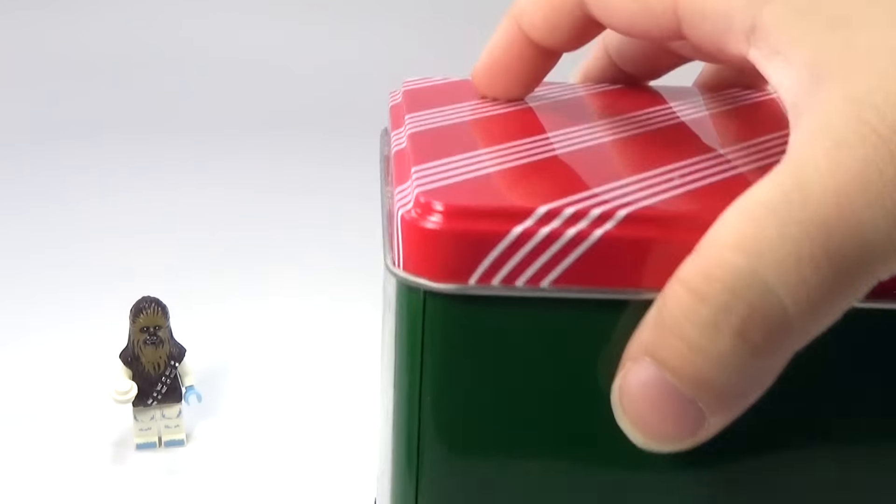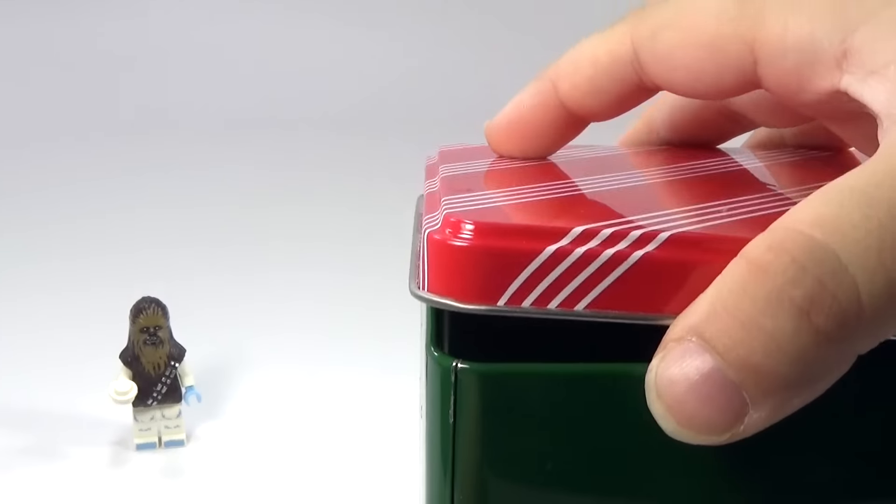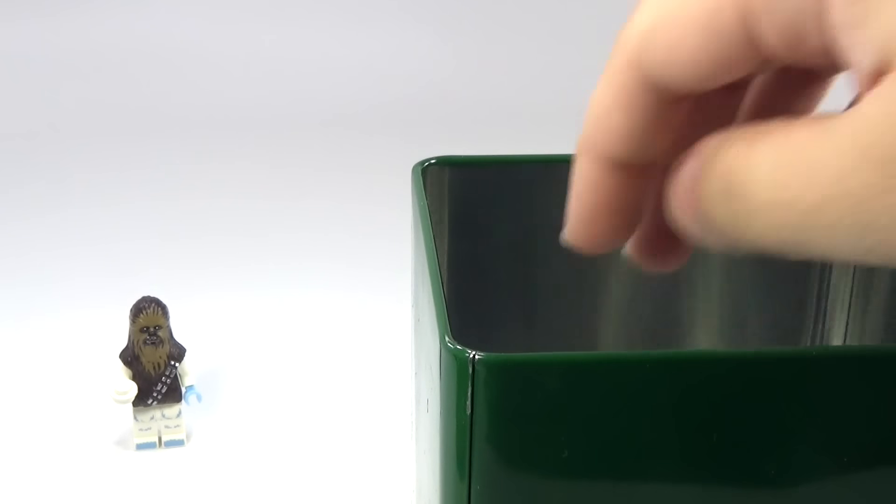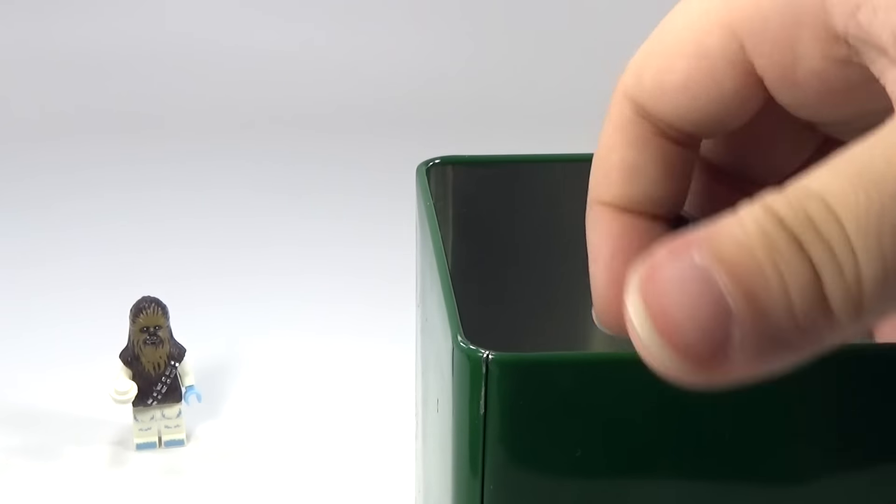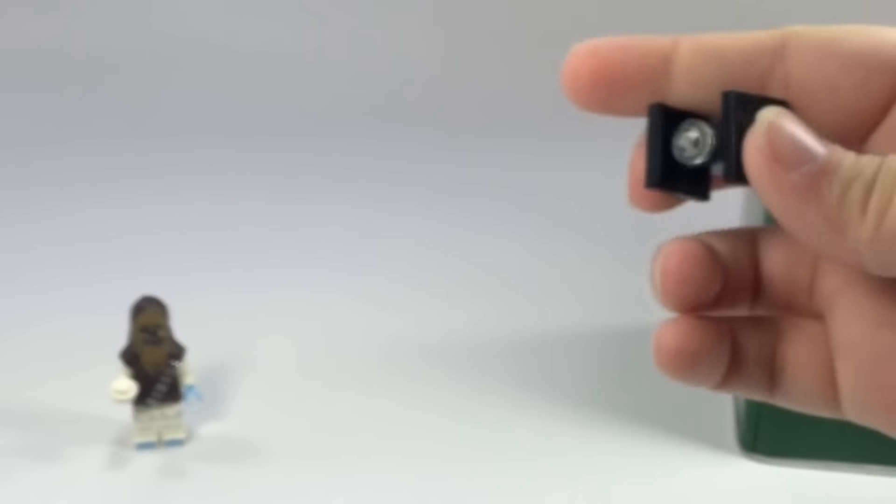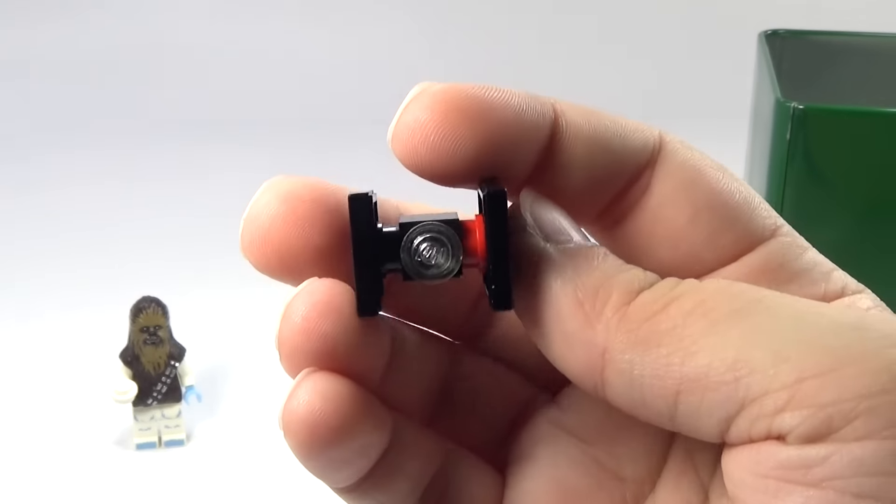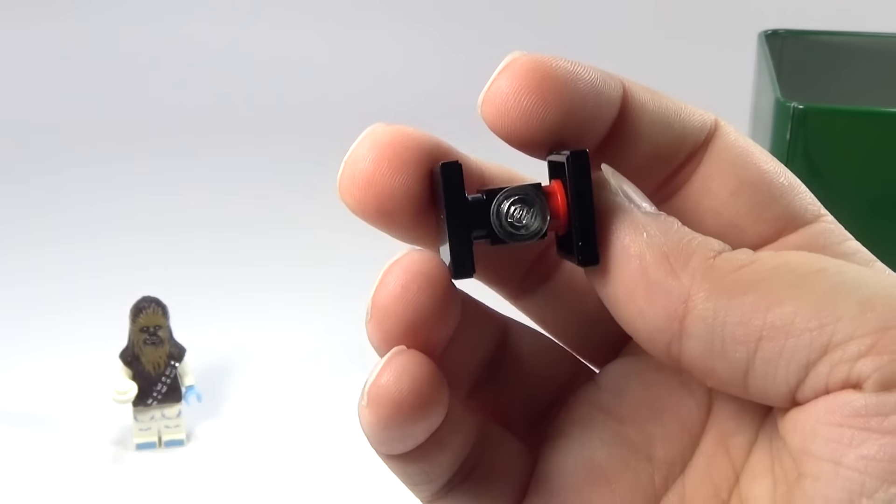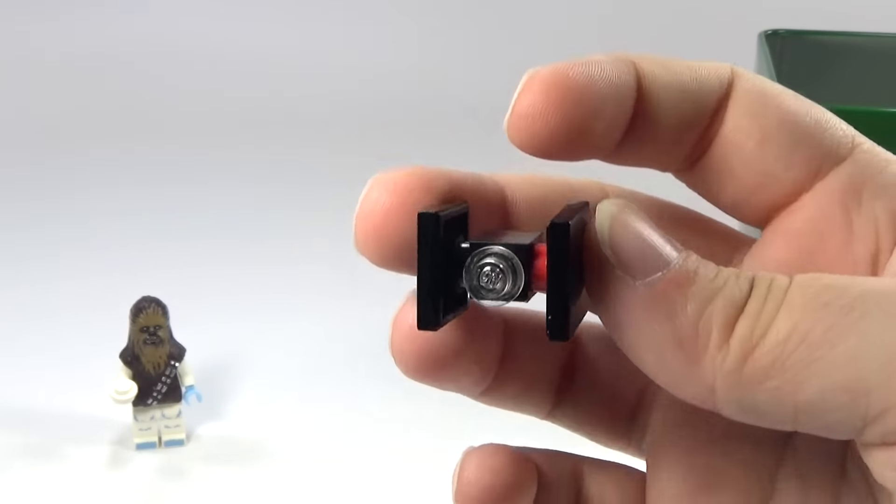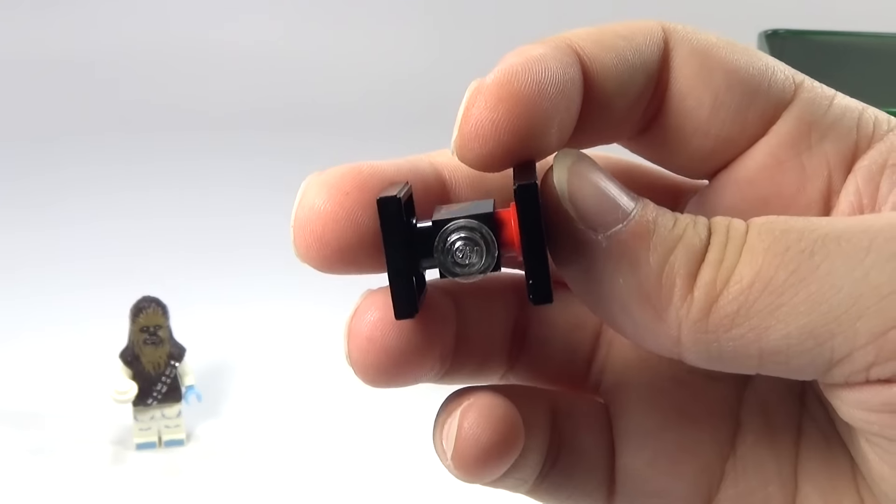So let's go ahead and open this box and see what kind of mystery is inside. And we have our little micro build today. This is the First Order Special Forces TIE Fighter. You can tell by the little red on the side there.